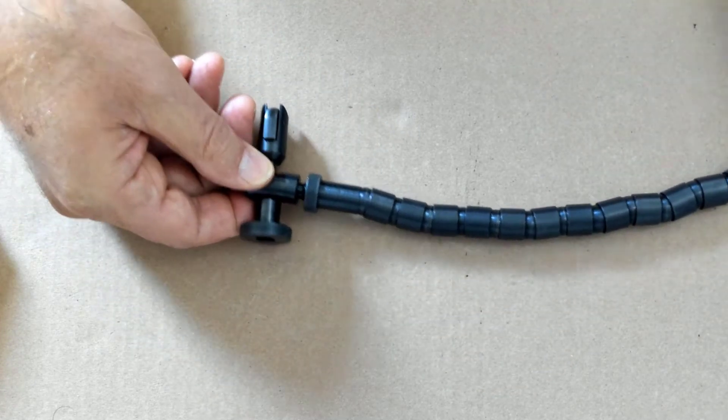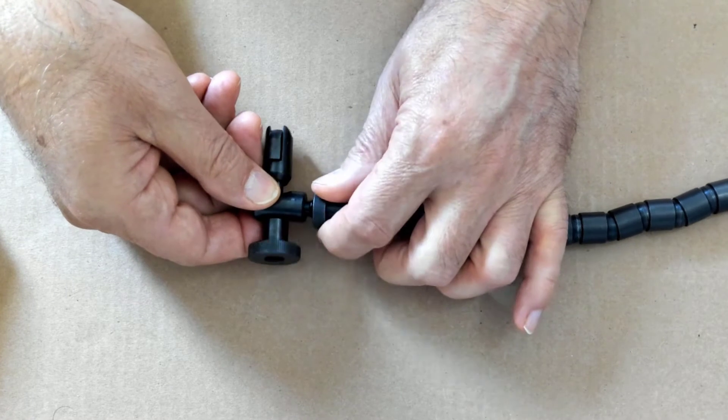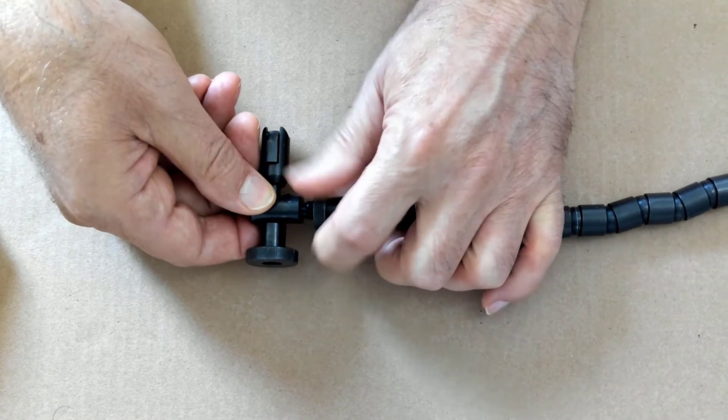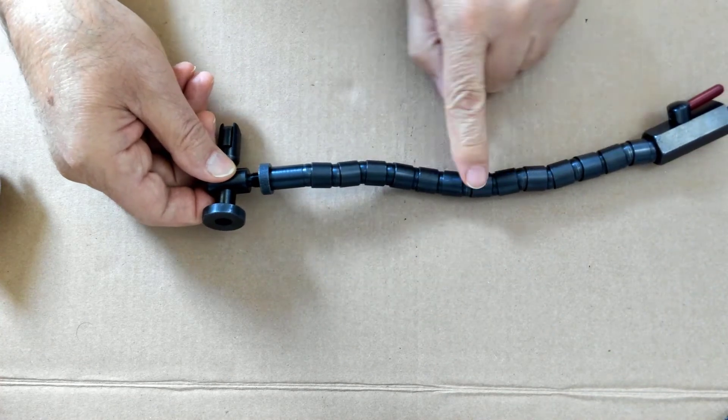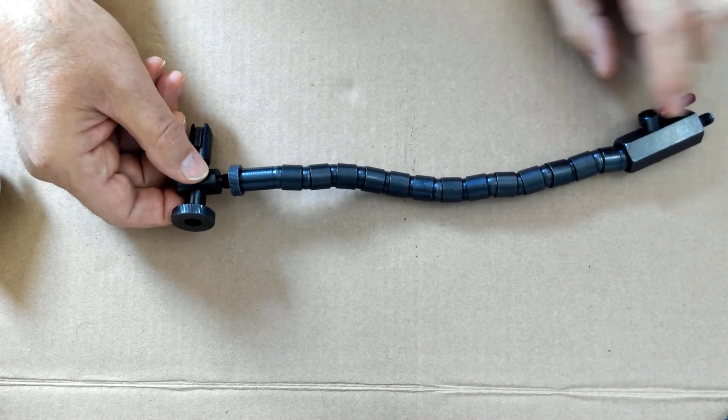If on the other hand, I back this out or thread it backwards to make the flexible snake a little bit stiffer, this is doing nothing more than tightening the cable inside the mechanism here.